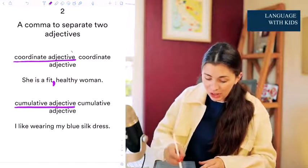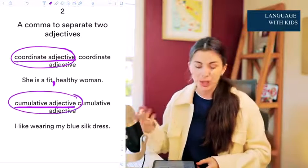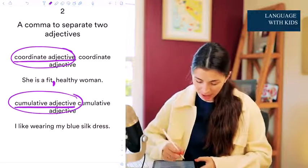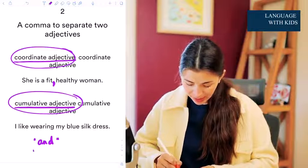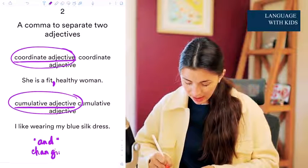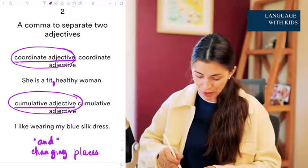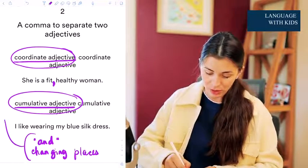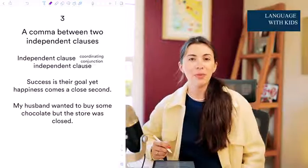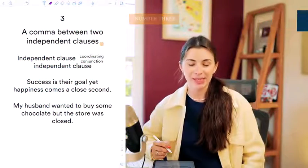You really need to make sure you understand the difference. The two main rules are: putting 'and' between the adjectives and changing their places. If both of these work, then you have coordinate adjectives and you use a comma. Rule number three: a comma between two independent clauses.